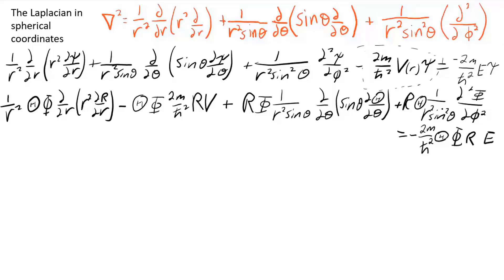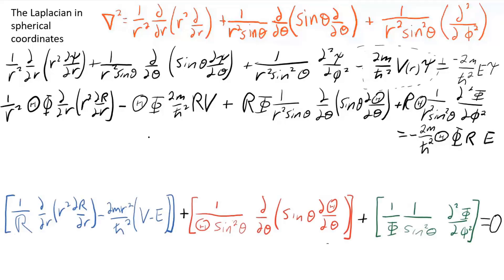To separate these, divide through by the whole wave function, capital phi times capital theta times capital R, because in each one of these terms, two of those three will cancel. When you do that, you will have the first two terms forming an equation that has only R in it because the capital theta and capital phi cancel out. And then the next two terms will make an equation that has only theta and phi in it, but not R, because the big R cancels out.